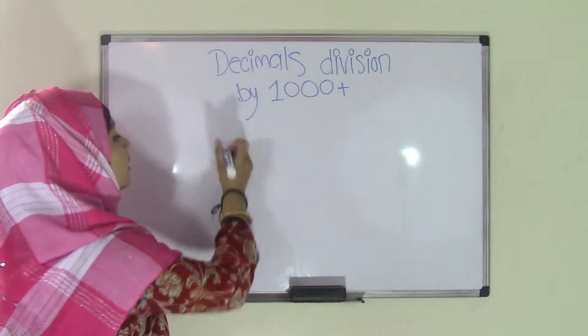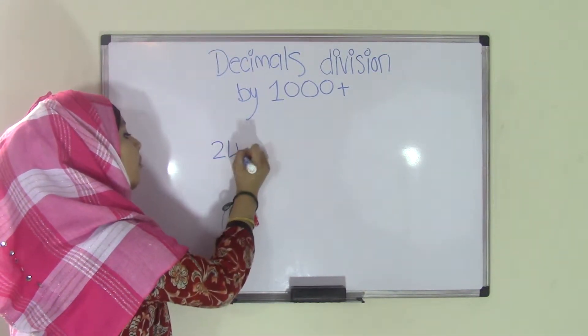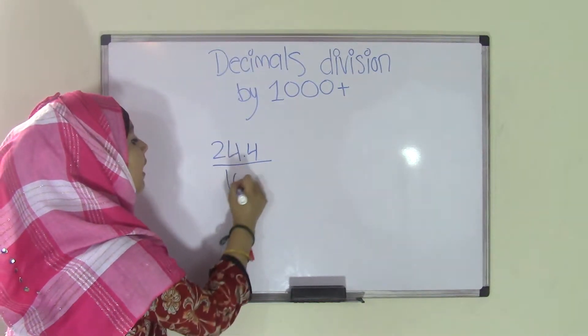So let's say we have a problem, such as 24.4 divided by 1,000.